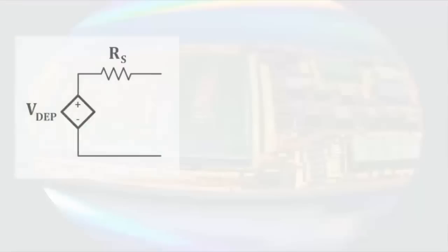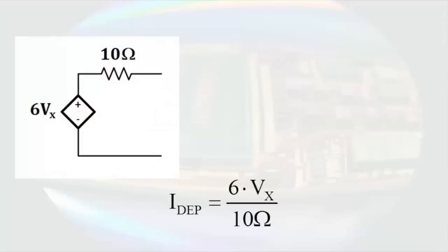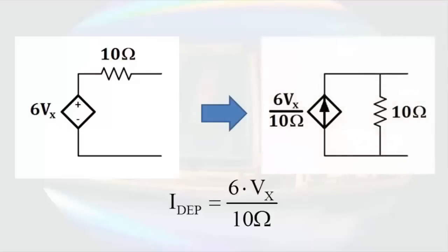First, it is perfectly acceptable to transform a dependent source as long as it is a dependent voltage source in series with a resistor or a dependent current source in parallel with a resistor. The value of the dependent source will still be related by Ohm's Law. So, if we had a dependent voltage source of 6Vx in series with a 10 ohm resistor, and we wanted to transform it into a current source in parallel with a resistor, the value of the dependent current source in the transformed circuit will be 6Vx divided by 10 ohms. Just remember, a source transformation cannot eliminate dependence.